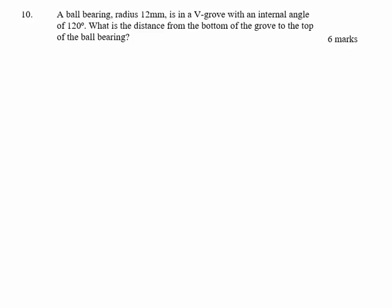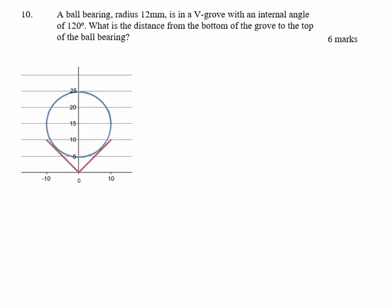Let's draw a quick sketch to see what we're talking about. Here's the ball bearing, here's the V groove, and what we need to find is the distance from the top down to the bottom there. We know the radius from the centre of the ball bearing, that's equal to 12mm. What we don't know is the distance from the centre of the ball bearing down to the bottom of the V groove, so we need to concentrate on what we do know.